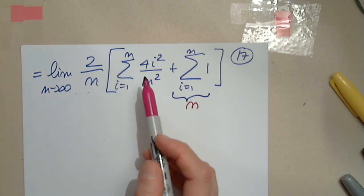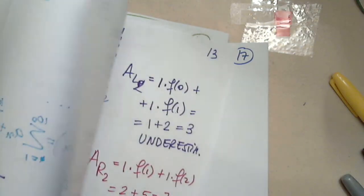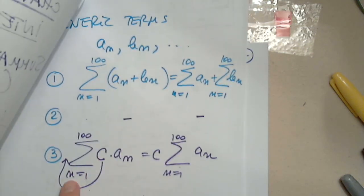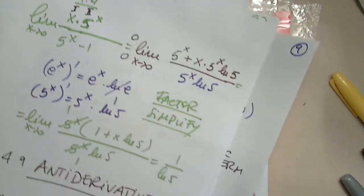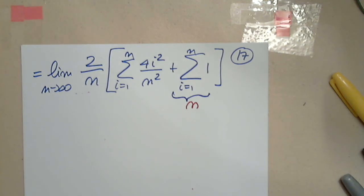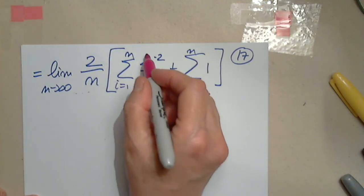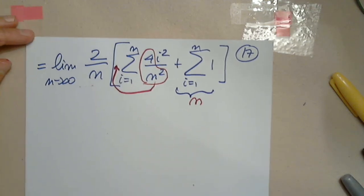Now I see another application of the same property with a constant. Here it is. If there is a constant that has nothing to do with the index and it's multiplied, not added, of course, multiplied, I can put it in front. And that's exactly what I'm going to do. This is a piece that has nothing to do with i, it's a constant, multiplies i squared. It will be put in front of the summation notation.